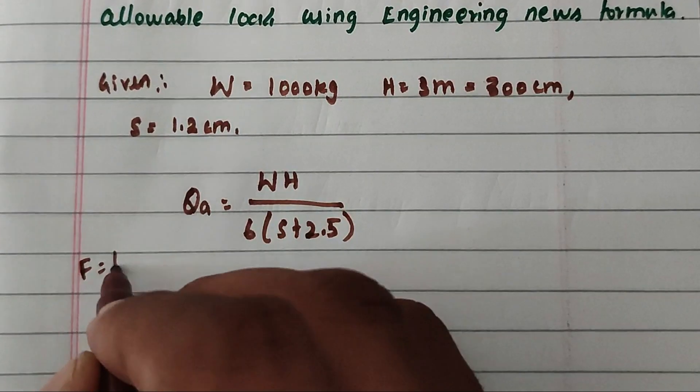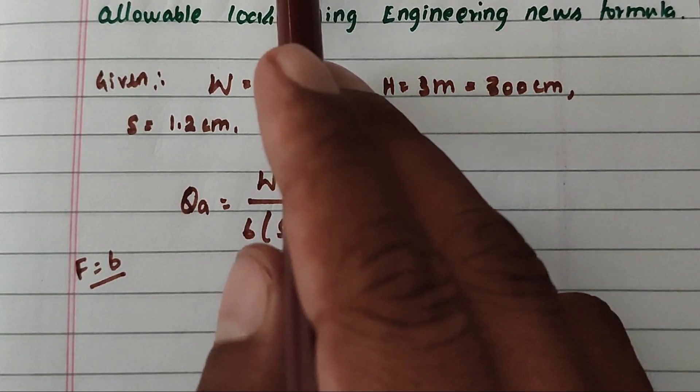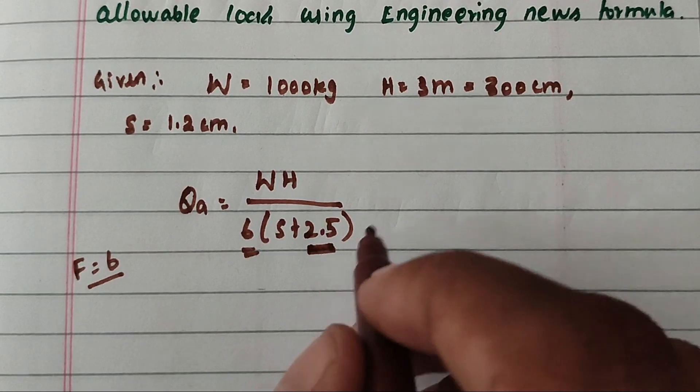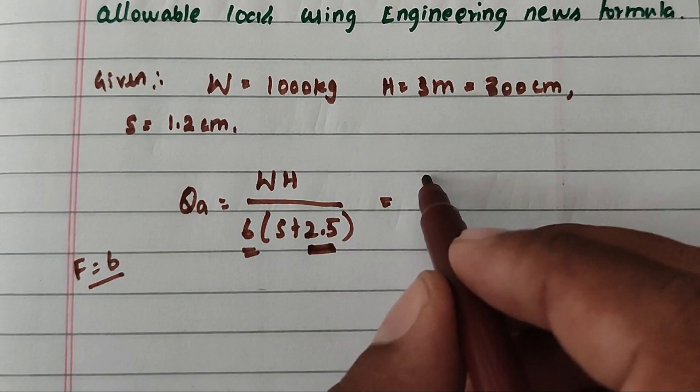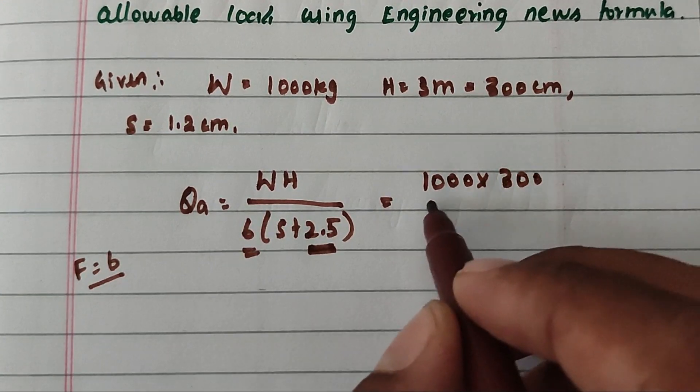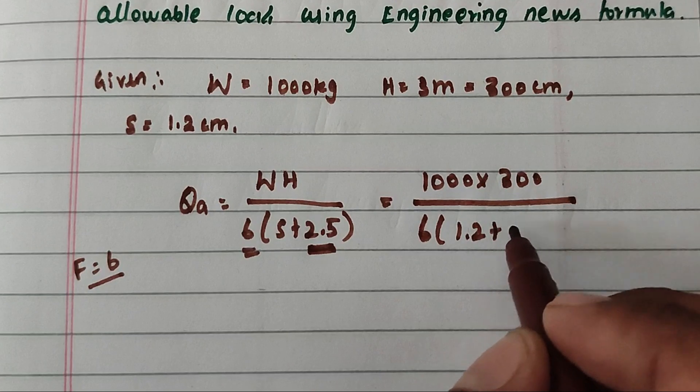The factor of safety F = 6, and for driven piles we use 2.5. Substituting the values: QA = (1000 × 300) / (6 × (1.2 + 2.5)).